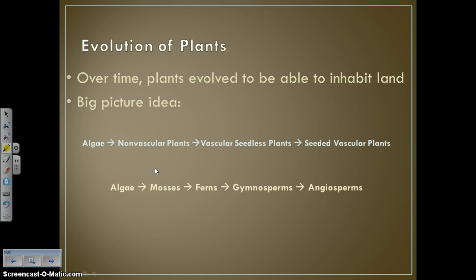So how did we get from algae to plants? Here's the big picture idea: we got from algae to non-vascular plants, to vascular seedless plants, to seeded vascular plants. We're going to break seeded vascular plants into two separate categories — gymnosperms and then angiosperms. Or using examples: we got from algae, to mosses, to ferns, to gymnosperms, and then to angiosperms.